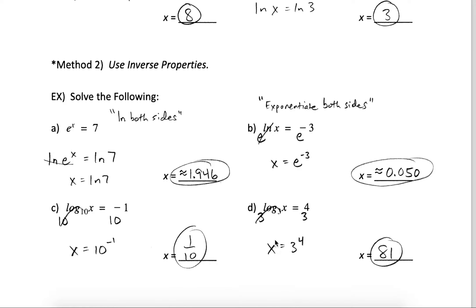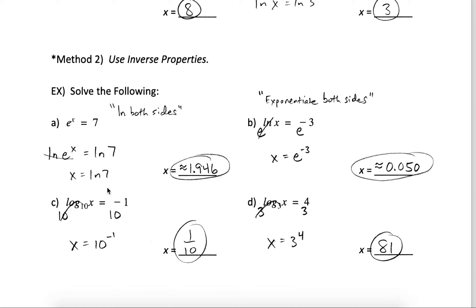Another thing we can do is use inverse properties. We can use logs to cancel exponential functions, or exponential functions to cancel logs. In this first part, e to the x equals 7. I can cancel a natural exponential function by using a natural log on both sides. The natural log of e cancels and drops that exponent down, giving us x equals the natural log of 7, which is approximately 1.946.